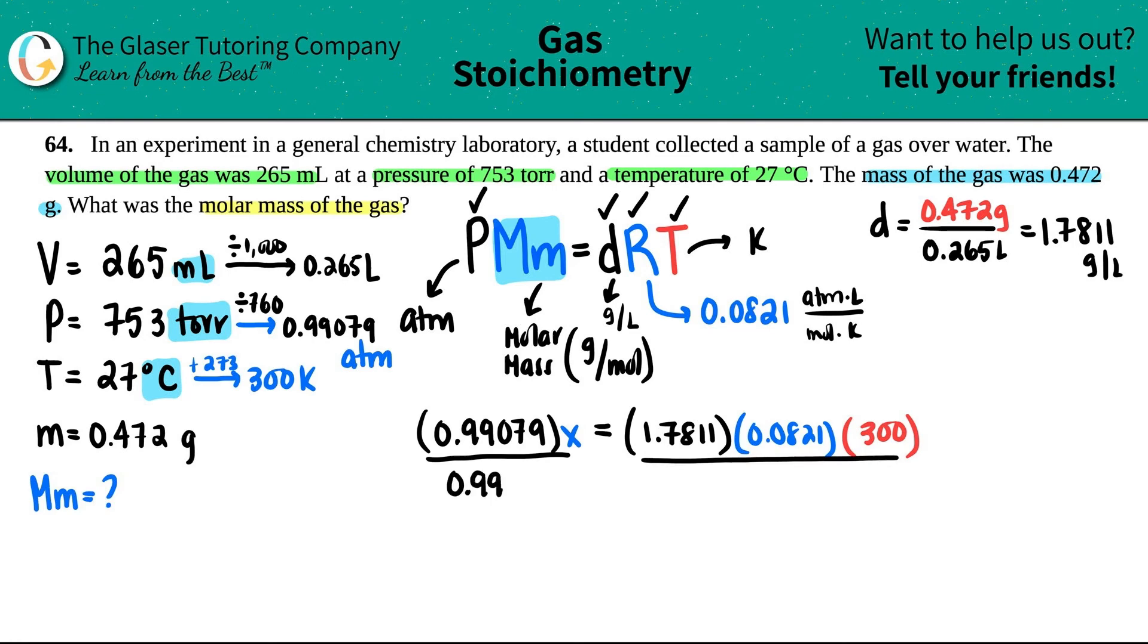I'm going to do this all in one shot on the calculator. So 1.7811 times 0.0821 times 300, and then divide that by 0.99079. Looking back, looks like they give me three sig figs, so three sig figs is the way to go: 44.3.